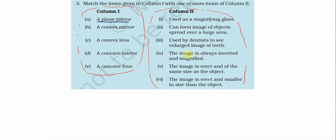Next statement: the image is always inverted and magnified — this is also wrong, because the image in a plane mirror is always virtual and erect. Next: the image is erect and of the same size as the object — this is correct for a plane mirror.